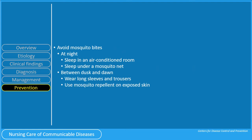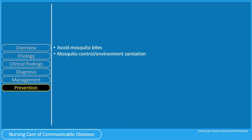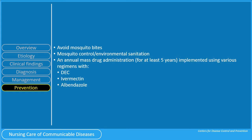Since this is a vector-borne disease, avoiding mosquito bites helps prevent the disease. At night, the CDC recommends sleeping in an air-conditioned room or under a mosquito net. Between dusk and dawn, people living in endemic areas should wear long sleeves and trousers and can use mosquito repellent on exposed skin. Mosquito control and environmental sanitation are also important. An annual mass drug administration using DEC, Ivermectin, and Albendazole has been launched by the Global Program for the Elimination of Lymphatic Filariasis.